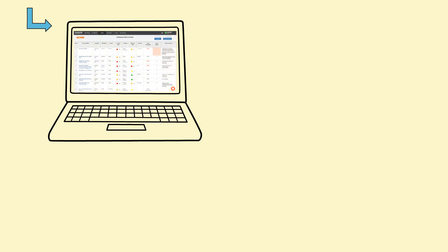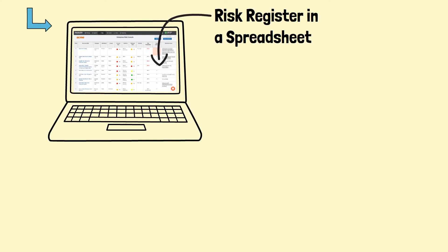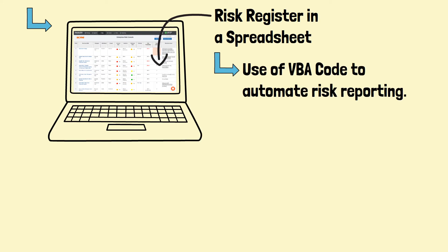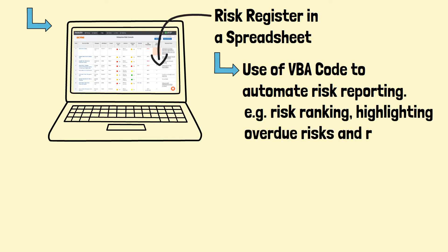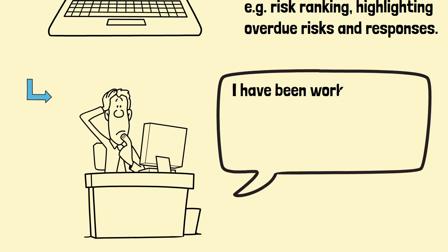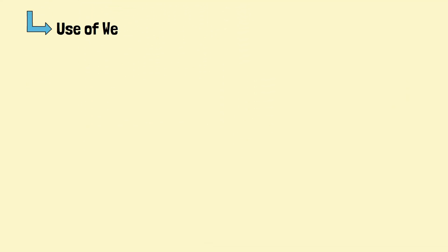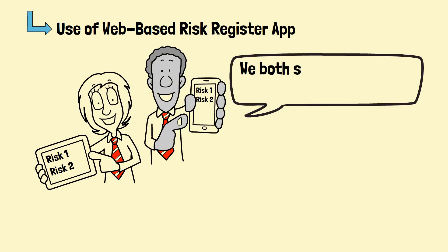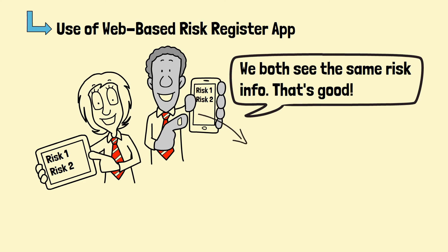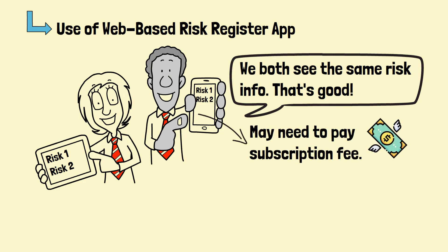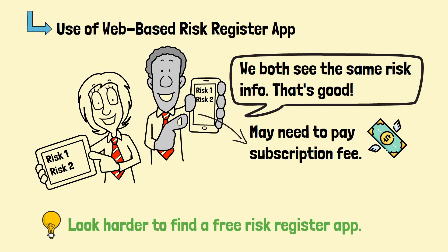The structure of the risk information can be easily captured in a spreadsheet. If Microsoft Excel is used, we could write some VBA code to automate certain functions, like plotting of top risks on a matrix and highlighting overdue risks and responses. However, a shortcoming of spreadsheets is that it's not easy to control the version if the risk register is to be used by more than one person. Web-based risk registers may become handy, as all users will always see the up-to-date risk information. However, many risk apps may need subscription fees to use the functions. If you look harder, you may be able to find a free risk register app.